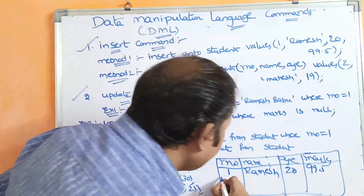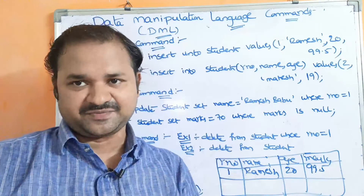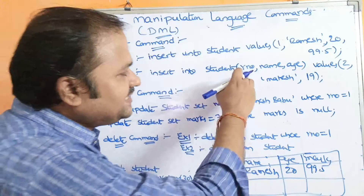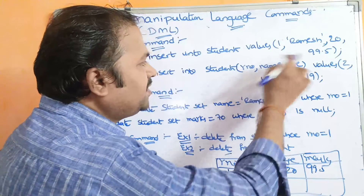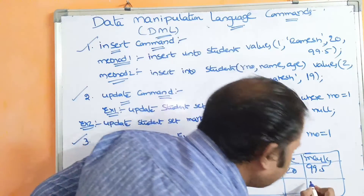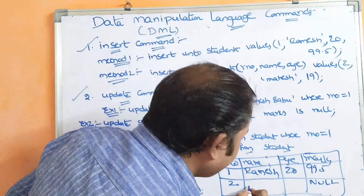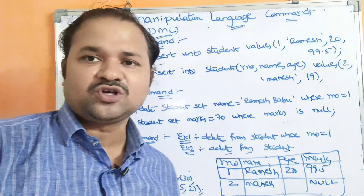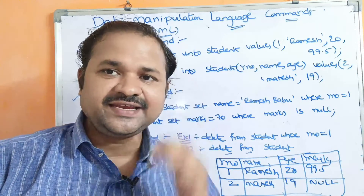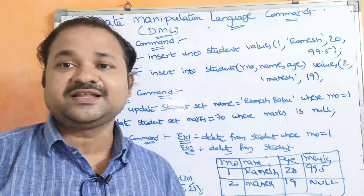We can use the second method if we want to insert data in only a few columns. Out of four columns, if we want to insert only in three columns, we use the second method: INSERT INTO student (roll_number, name, age) VALUES (2, 'name', 19). Now null will be stored in the marks column since we didn't provide a value for it. If we want to insert data in each and every column, use the first method. If we want to insert data in only few columns, use the second method.